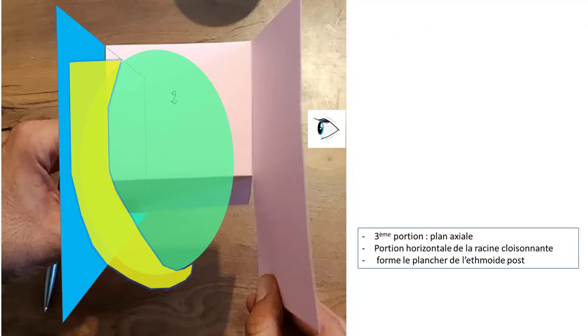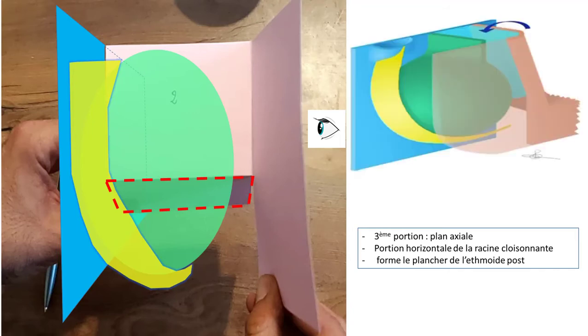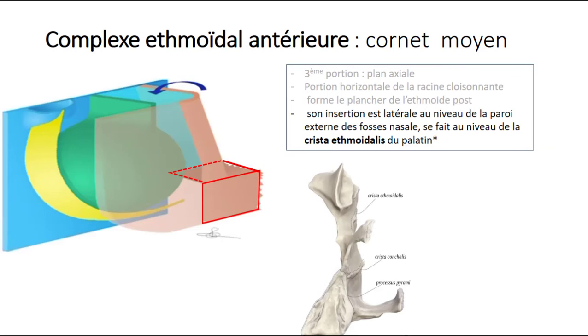The third portion runs on an axial plane and forms the horizontal basal lamella, which is the floor of the posterior ethmoid. It attaches laterally to the lateral nasal wall, to the crista ethmoidalis of the palatine bone, which is an important landmark in the surgery of the pterygopalatine fossa or in the surgery of bleeding if you want to clip or to ligate the sphenopalatine artery.